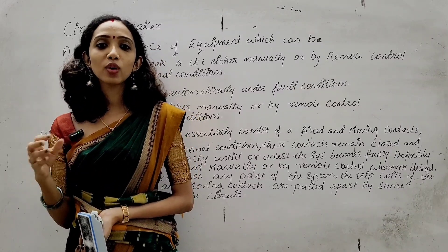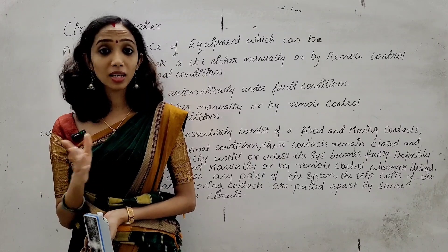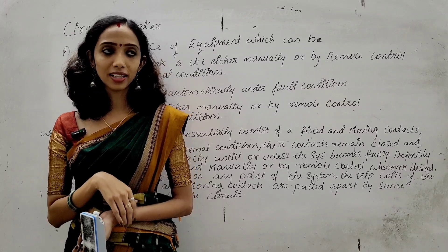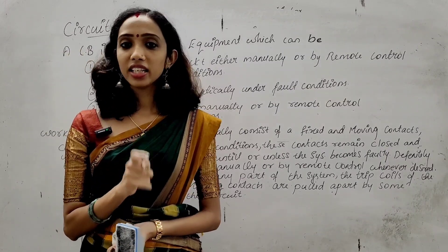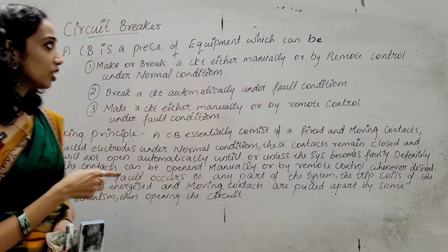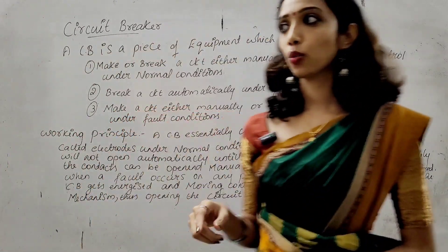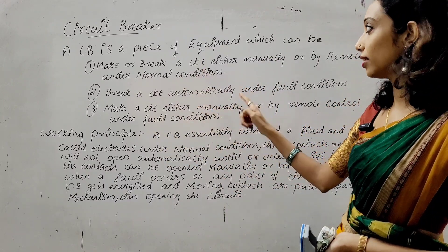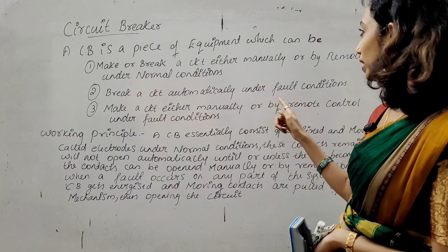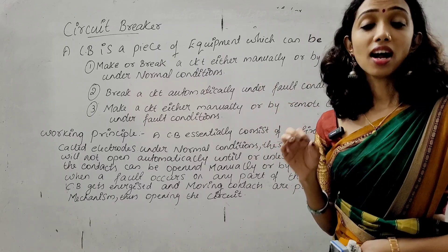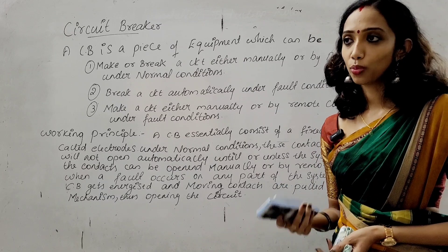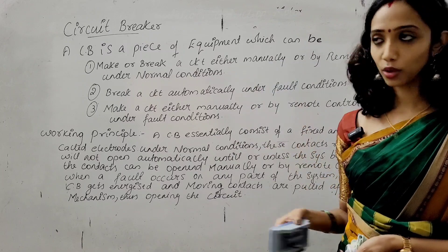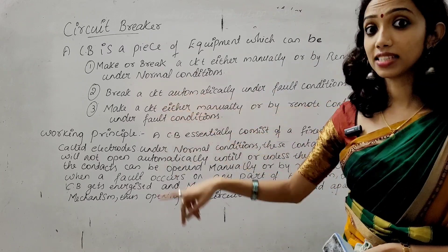What are the different types of circuit breaker? The circuit breaker is a piece of equipment which can make or break a circuit either manually or by remote control under normal condition. So in normal condition you can make or break a circuit.